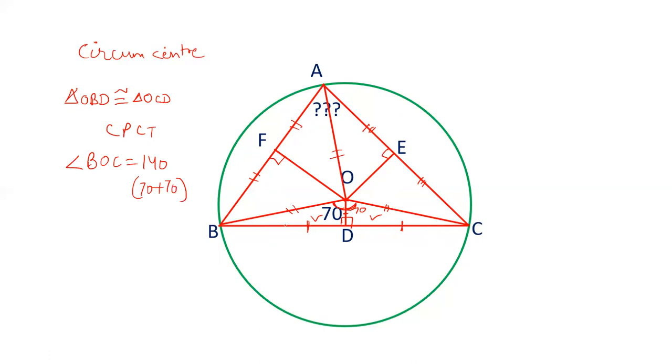Friends, in a circle, if O is the center, angle BOC is given, then angle BAC will be half of angle BOC. Angle A, which is angle BAC, is half of angle BOC. This is a property of circles. Half of BOC means half of 140, that means angle BAC is 70 degrees.